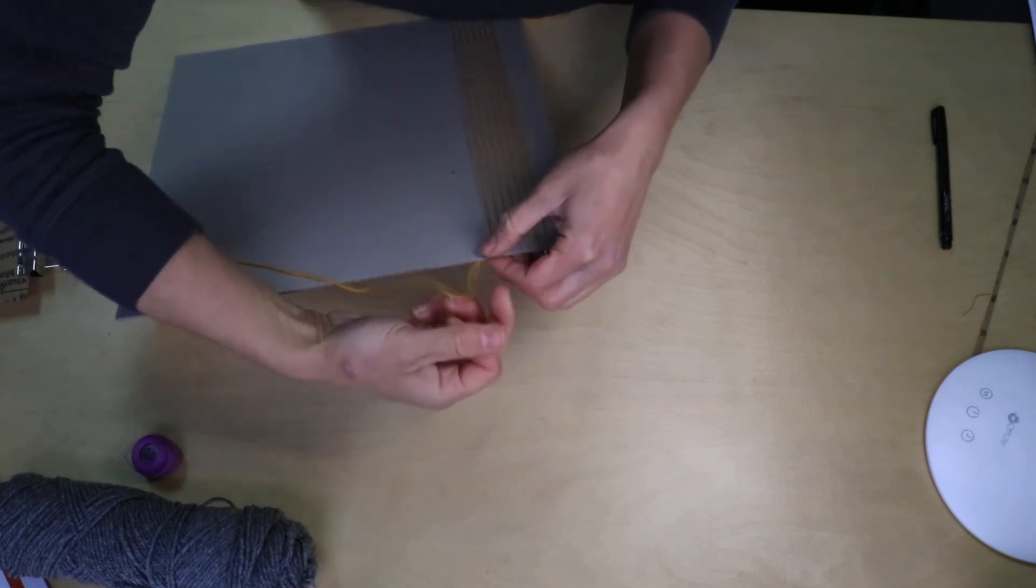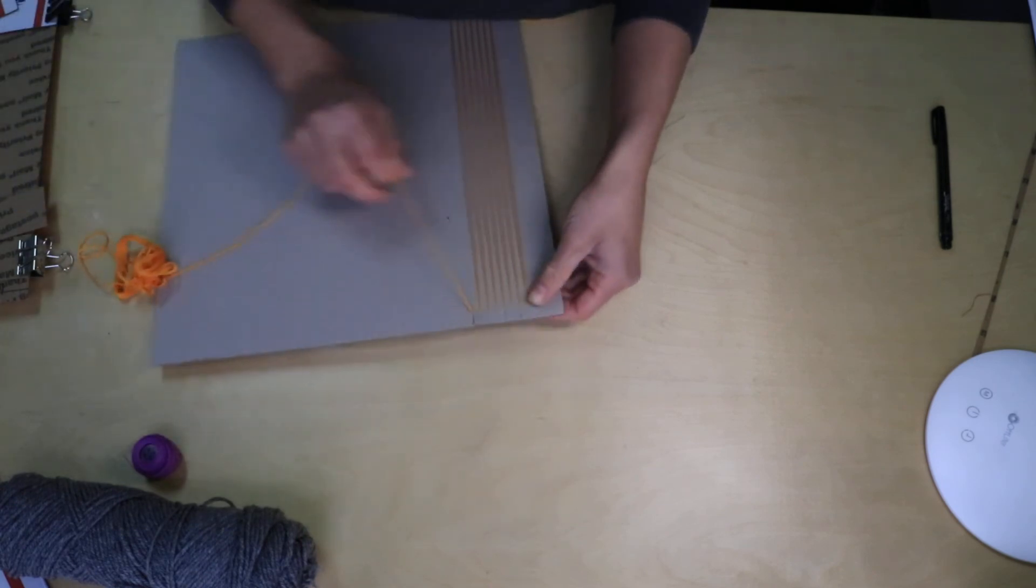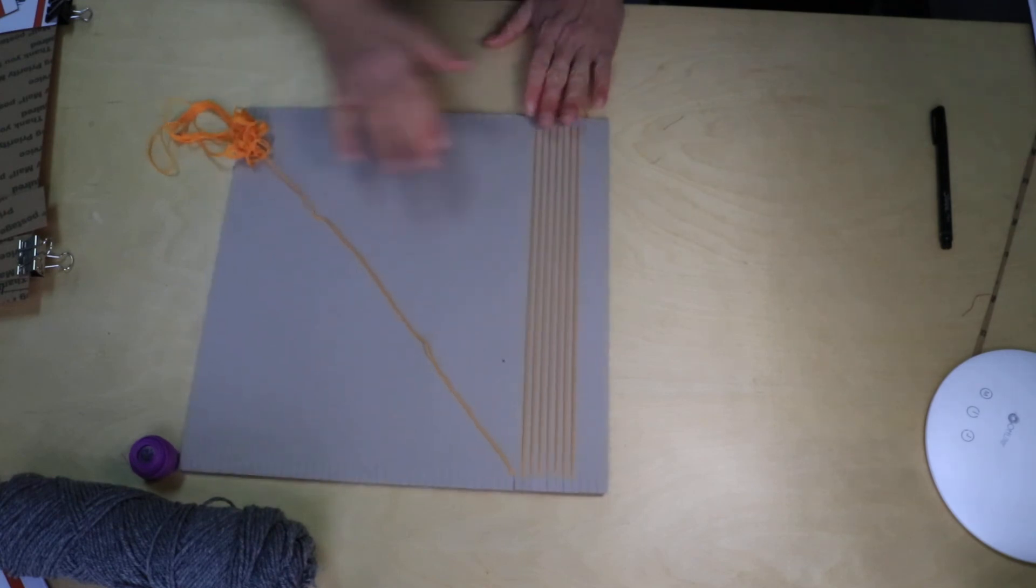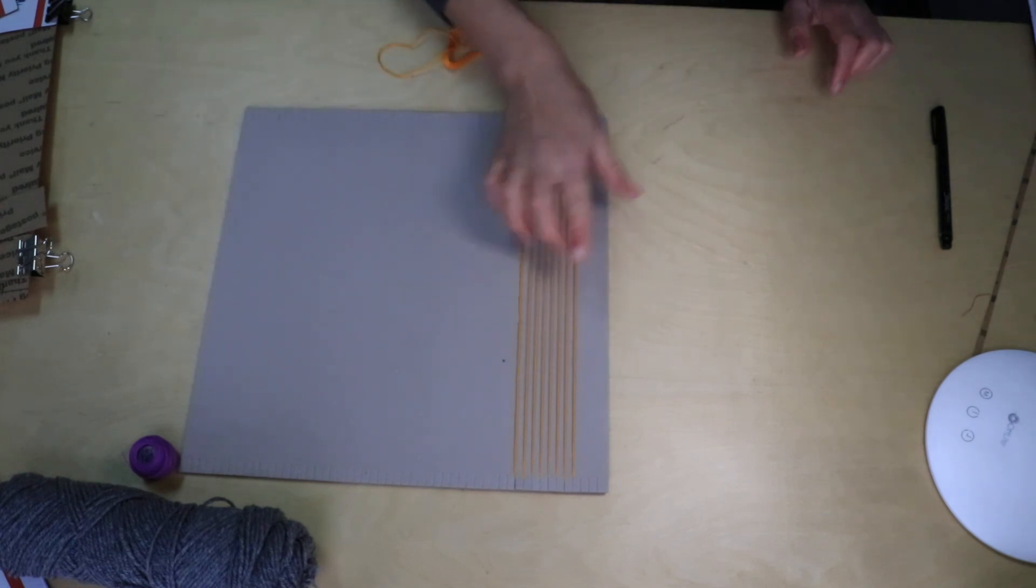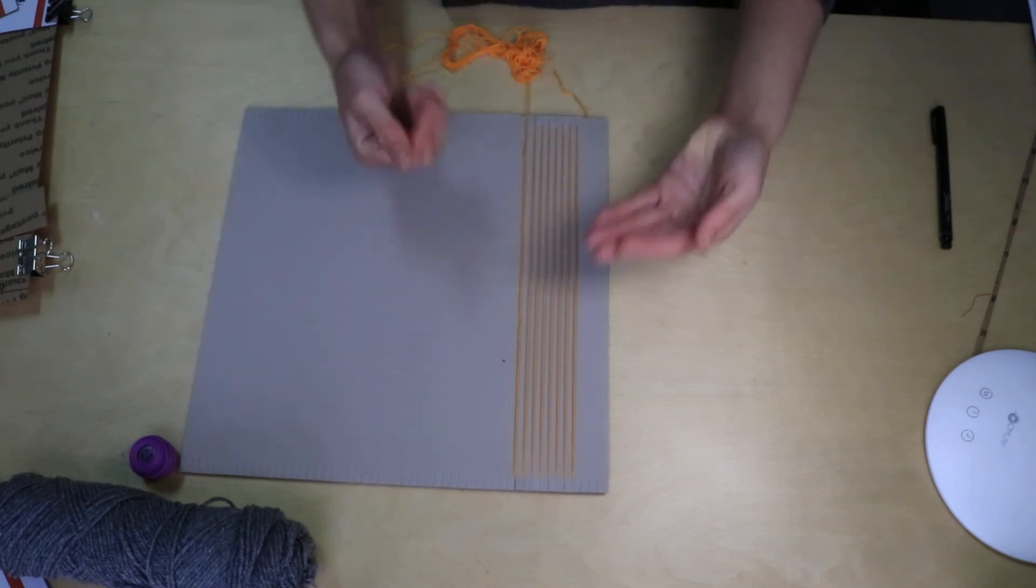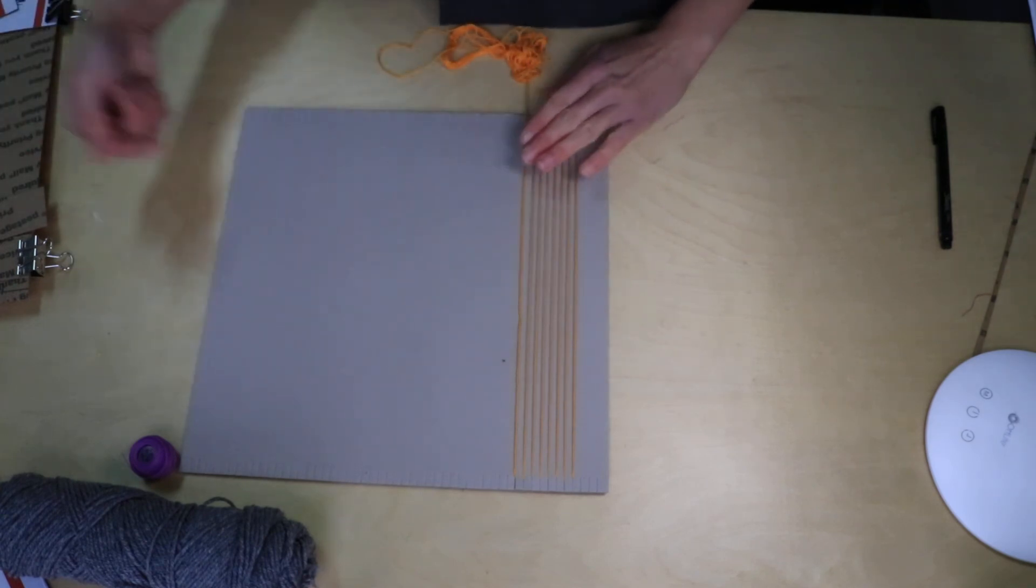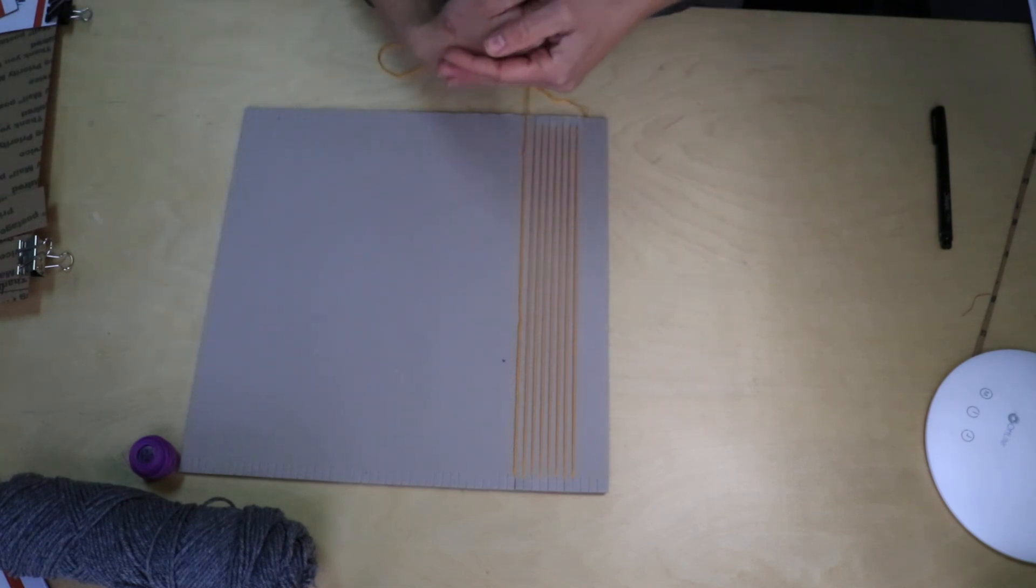Now the important takeaway here is that you should have an even number of warp threads, so all of this together as it goes across, you need to have an even number so that you can alternate over-under across your pattern. So when you're going this way, you should go over, under, over, under, and then when you come back, it'll be the reverse, which will give you a nice pattern between the two.